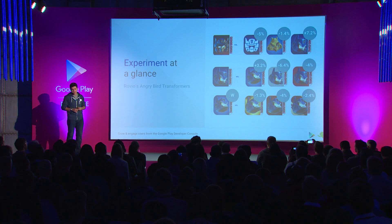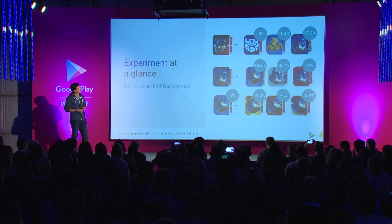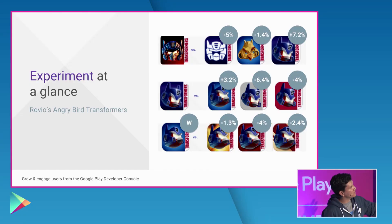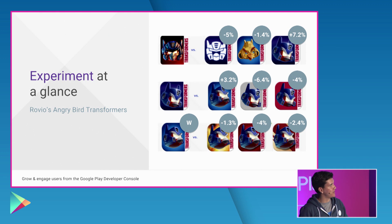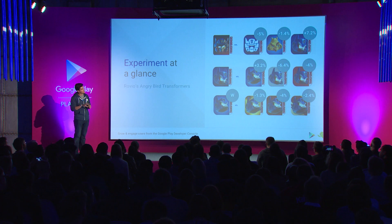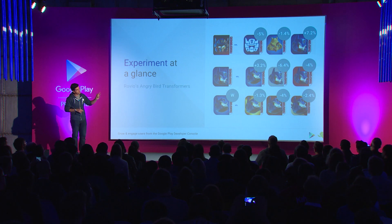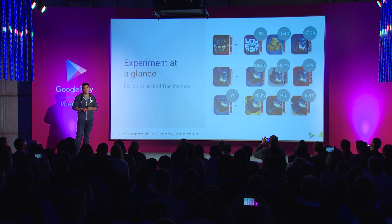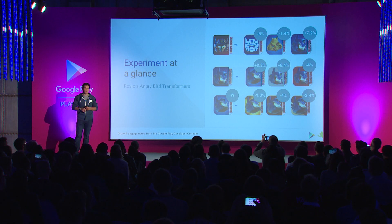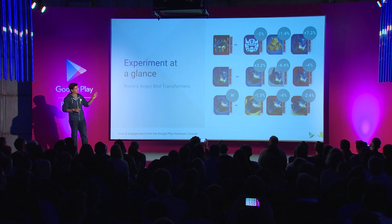Here's a great example of a store listing experiment from Rovio for Angry Birds Transformers. In the first experiment, they tried a few different designs and found the third one improved installs by 7%. Then they decided to iterate, trying a different tilt on the icon, and found the first one provided an additional 3% conversion rate improvement. Finally, they validated the experiment by changing the background color. In this case, they found the control performed the best, so that's the icon they went with.